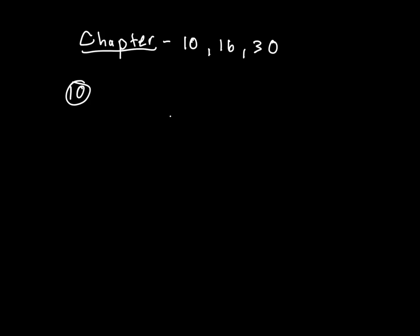This problem considers additional aspects of the example calculating the effect of mass distribution on a merry-go-round. How long does it take the father to get the merry-go-round to an angular velocity of 1.5 radians per second?